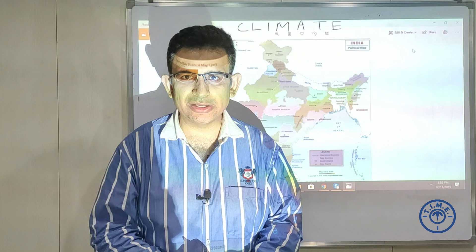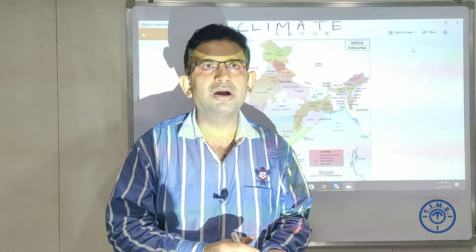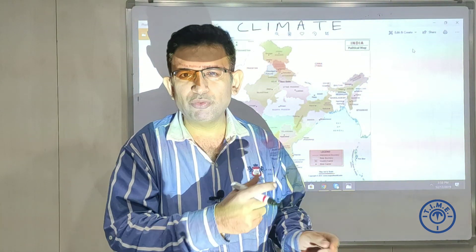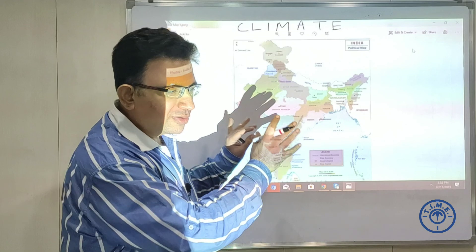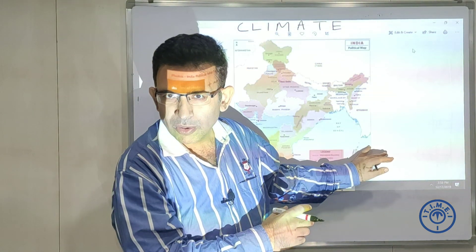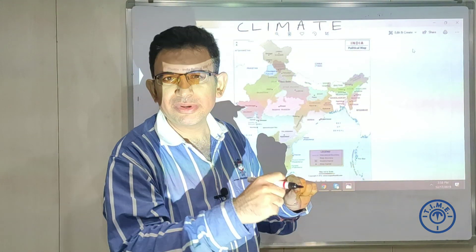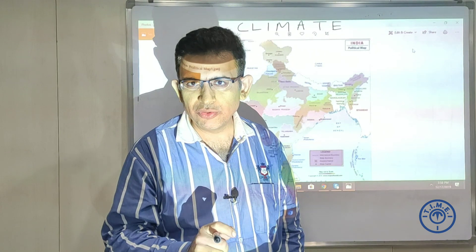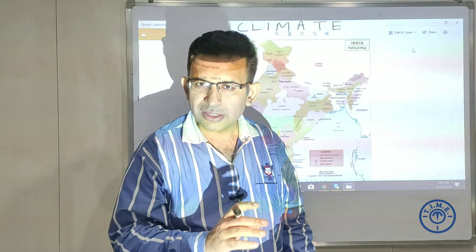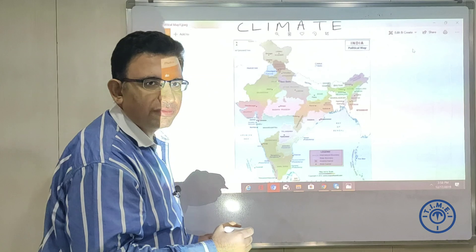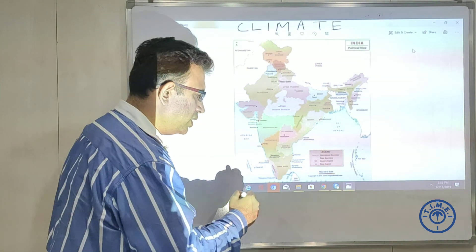Welcome to another video series from Time Institute of Management. Today's topic is the Southeast Monsoon winds. Most students tend to get confused about what branches are there — the Arabian Sea branches and the Bay of Bengal branches — sometimes remembering, sometimes not. So we'll do a quick and easy video for you to remember this concept.